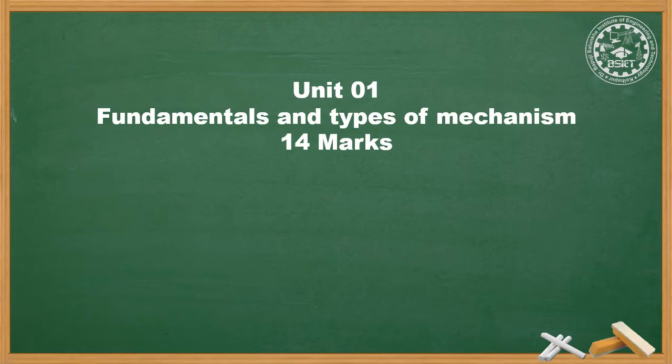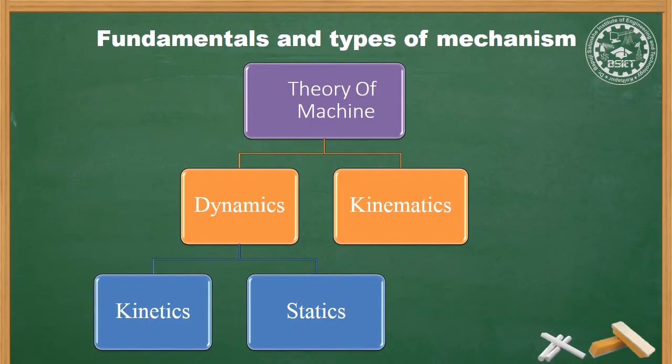Unit 1 is Fundamentals and Types of Mechanism. This chapter contains 14 marks. In fundamentals, we see all definitions and basic concepts of Theory of Machine. There are different types of mechanisms as per the four-bar chain, single slider crank chain, and double slider crank chain. These mechanisms are covered in this chapter. So let's start the fundamentals of this chapter.